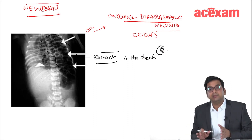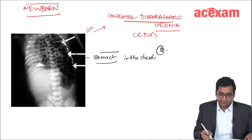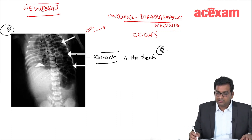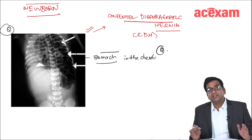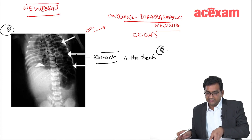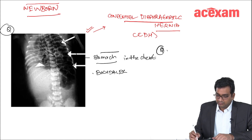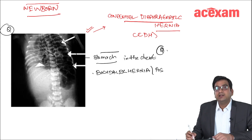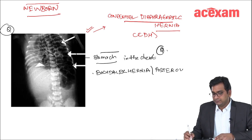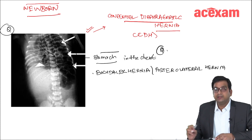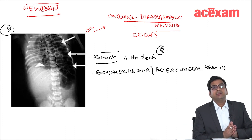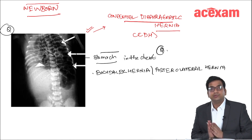Nowadays in the NEET PG, people are asking these kinds of questions. So this diagram is very important to remember. The congenital diaphragmatic hernia is also known as the Bochdalek hernia, or the posterolateral hernia.